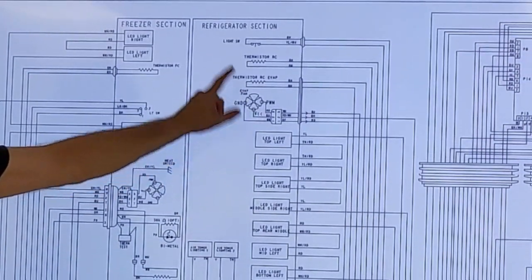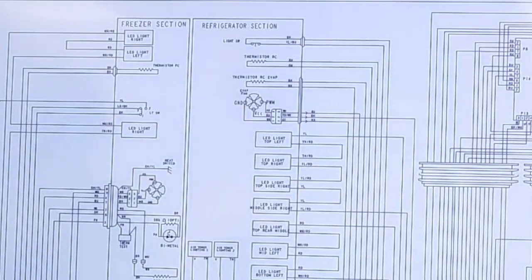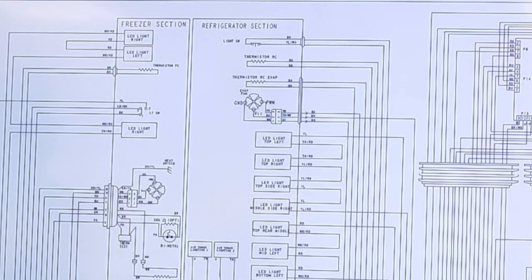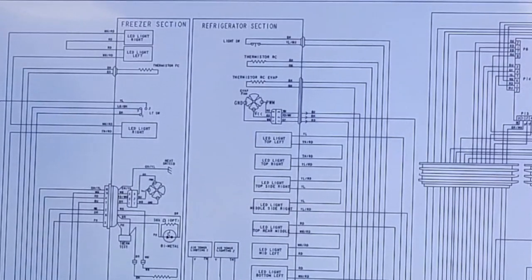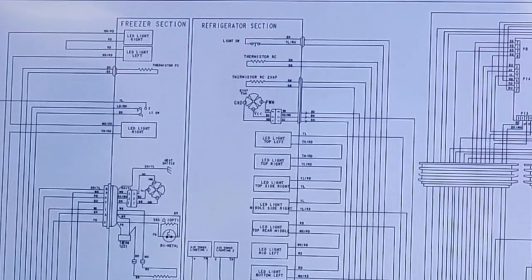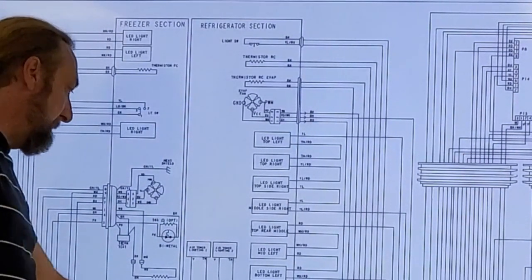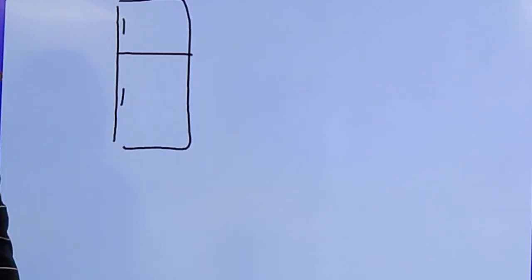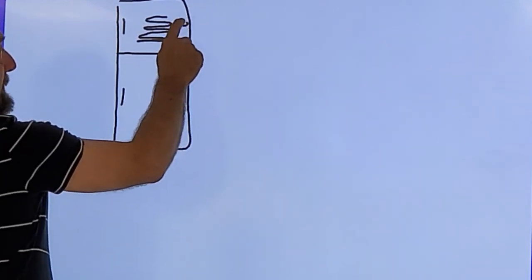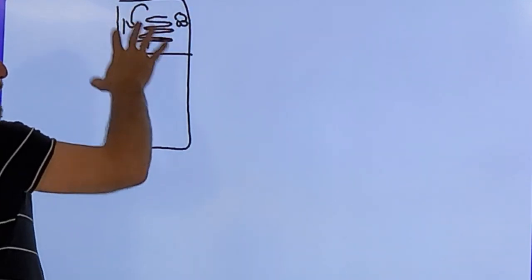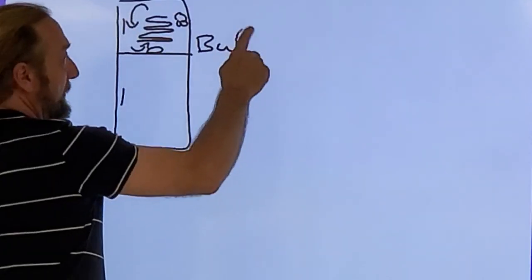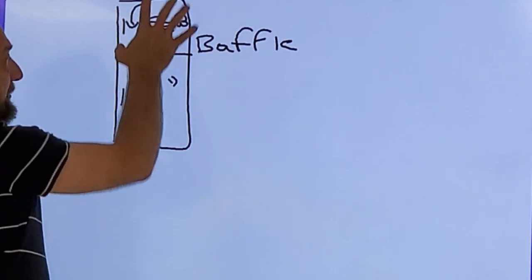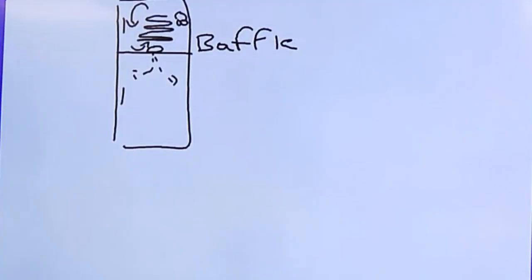This is an evaporator fan in the refrigerator section. What does that mean if it's got an evaporator fan in the refrigerator section? It's got a three-way valve — a dual evaporator. So most refrigerators, let's start with the most simple basic refrigerator. Let's say a top and bottom refrigerator where the freezer's on the top and the refrigerator's on the bottom. You have an evaporator here and a fan, it circulates the air in the freezer to cool it, and it has an opening called a baffle, and some of that cold air goes into the refrigerator section from the freezer to cool the fridge. That's how most refrigerators were designed.